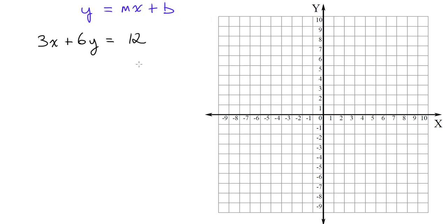Sometimes you want to graph a linear equation, but it's not in slope-intercept form. For example, we have 3x plus 6y equals 12, which is in standard form. In order to graph this line using slope-intercept, I need to rewrite it in slope-intercept form. Remember, when we talk about equation forms, we're talking about everything being in the exact spot where it belongs — y to the left of the equal sign, and to the right, mx plus b. Here, y is to the left, but so is 3x, and 3x does not belong on the left-hand side. The constant 12 is in the right spot, but 3x needs to move between the equal sign and the 12.